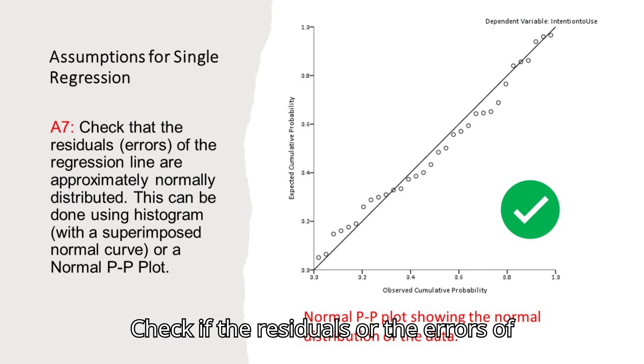Check if the residuals or the errors of the regression line are approximately normally distributed. This can be done using histogram, with a superimposed normal curve, or a normal P-P plot.